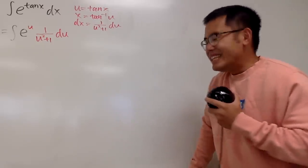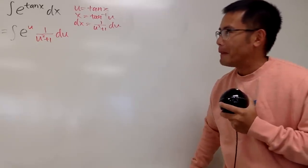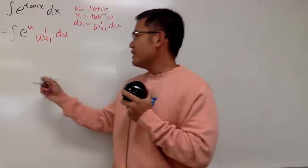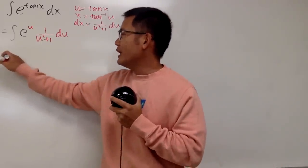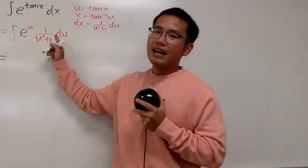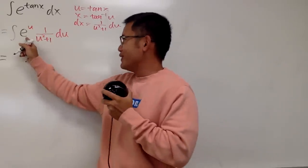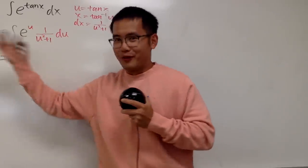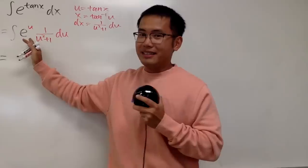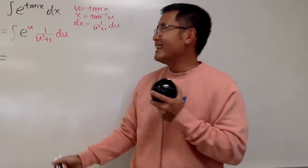We didn't make the integral any easier at all — I'm sorry — but it's okay, we can still do this. Check this out: here is the deal. We will actually do partial fractions on this. Don't let e to the u bother you; however, we cannot pull e to the u to the front of the integral. We'll just have to leave it and focus on the 1 over u squared plus 1 part and break it into two fractions.